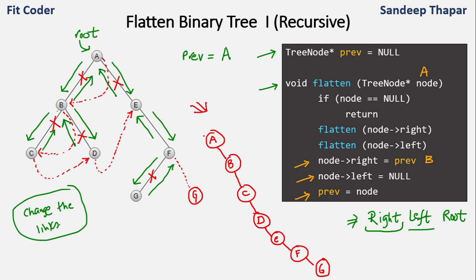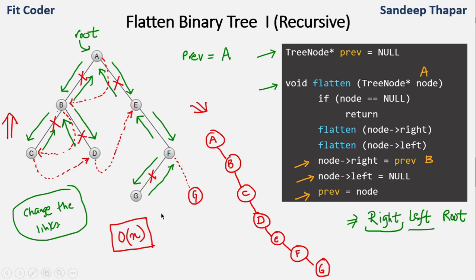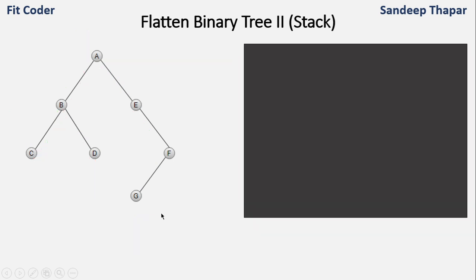The time complexity of the recursive method is O(n). This can also be done via an iterative method. The second method is similar to the first, but instead of using the system stack we'll use an explicit stack. Let's see the algorithm: we create a stack and push the root node A into it.